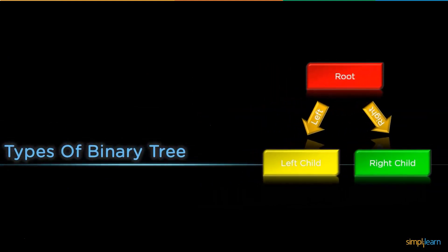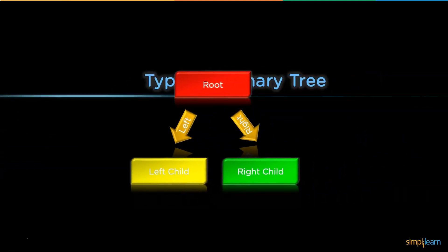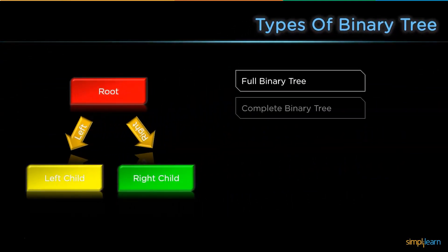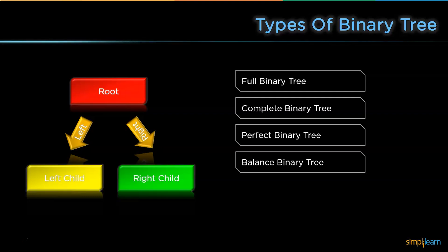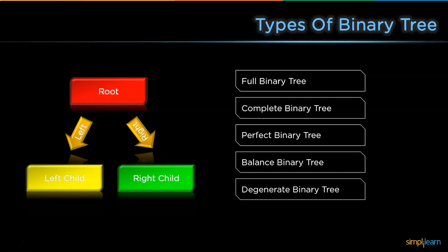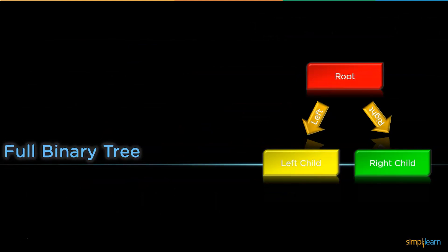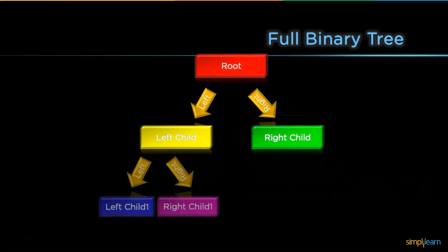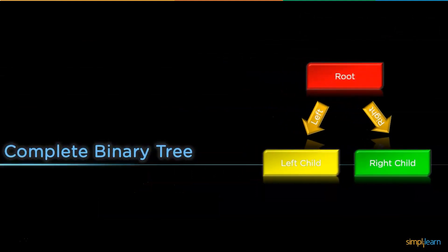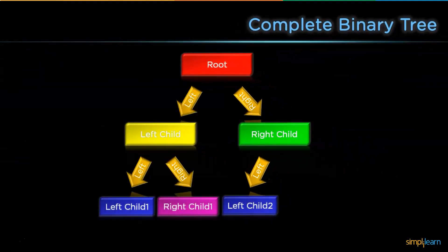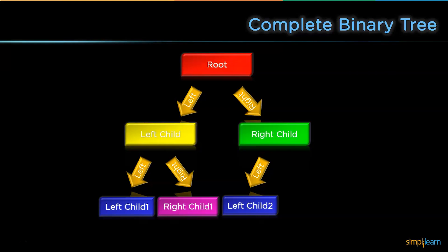Now let's discuss the different types of binary trees. We have the full binary tree, the complete binary tree, the perfect binary tree, the balanced binary tree, and the degenerate binary tree. A full binary tree is one where each node can have either two children or no child at all. A complete binary tree is one where each node on all levels except the last must have two children, and at the lowest level all leaves reside on the left side.